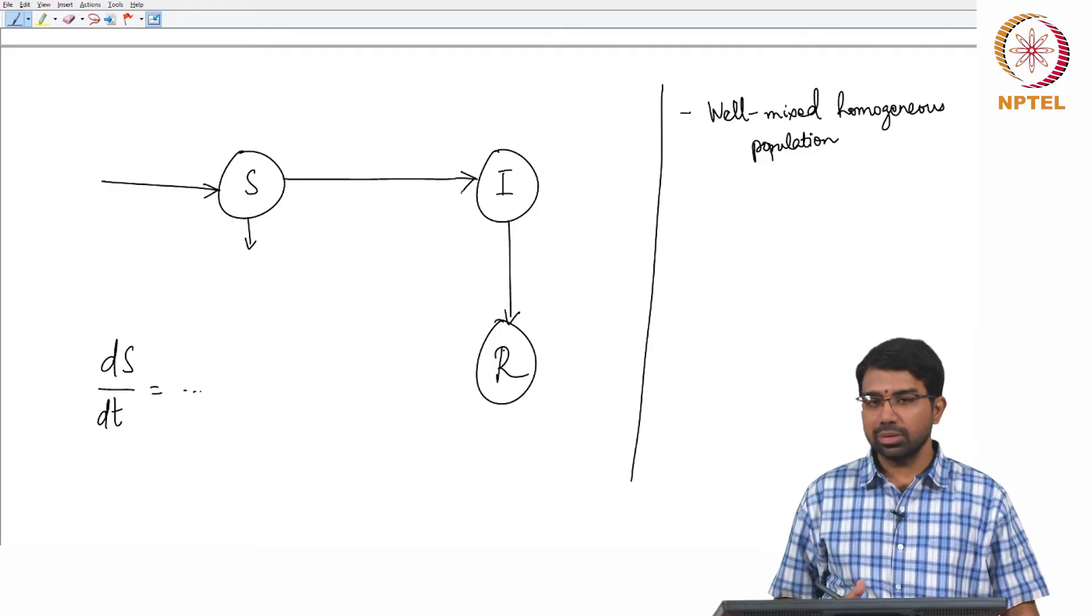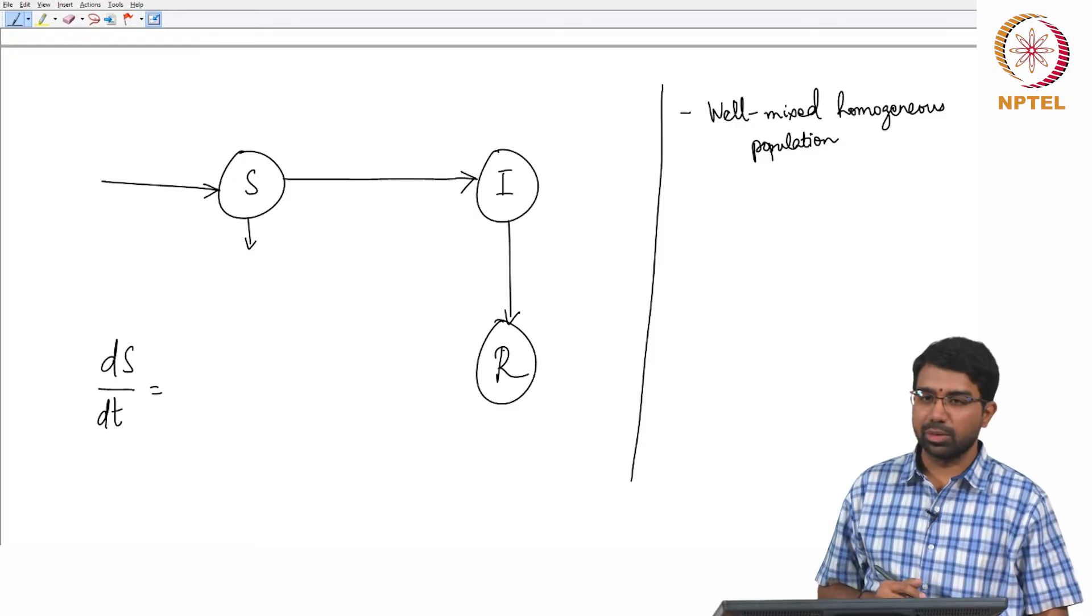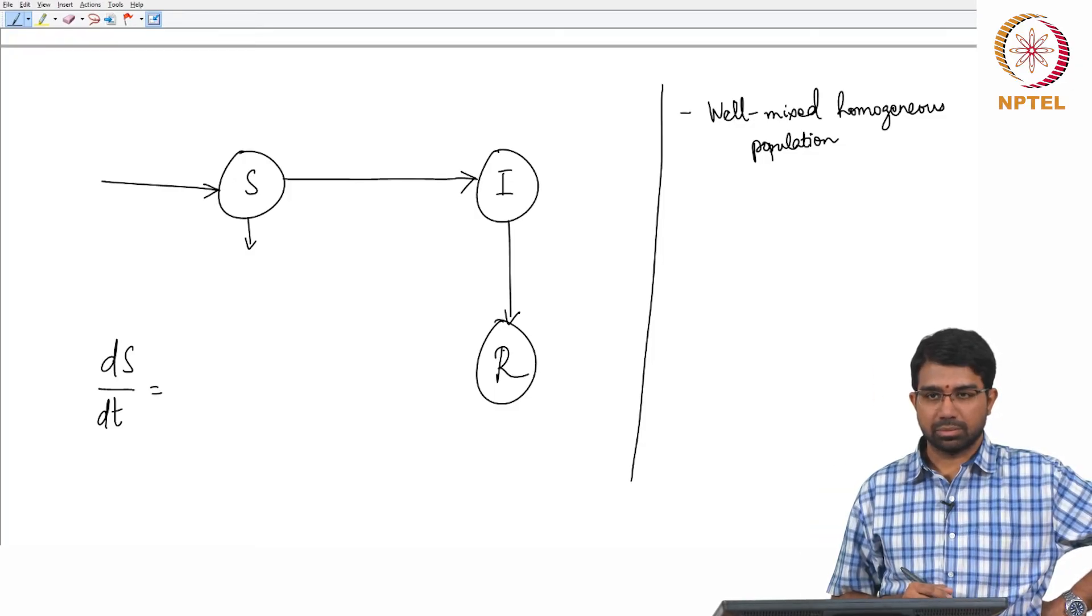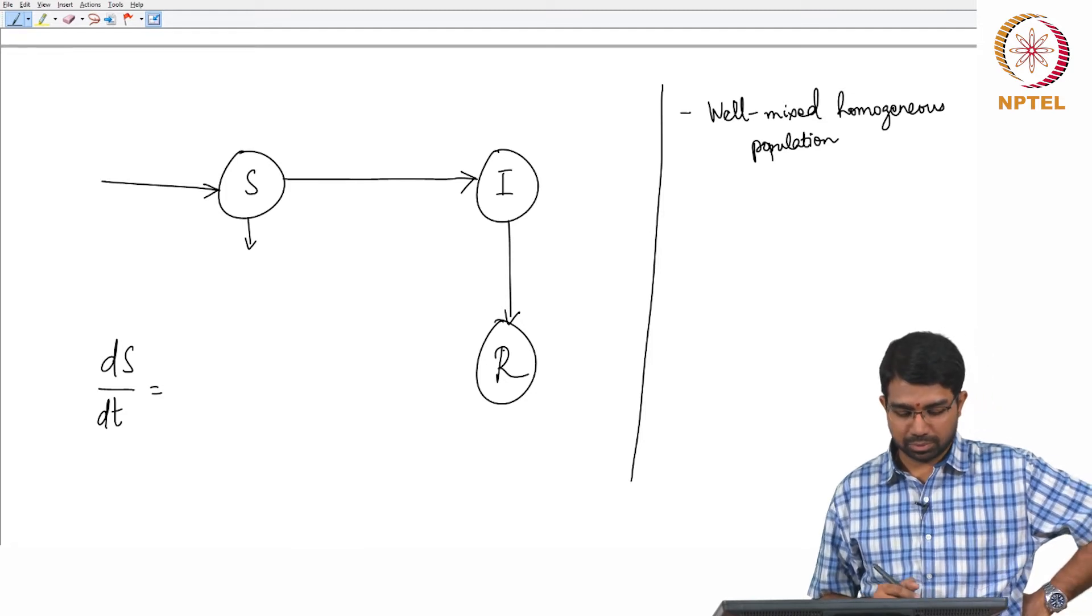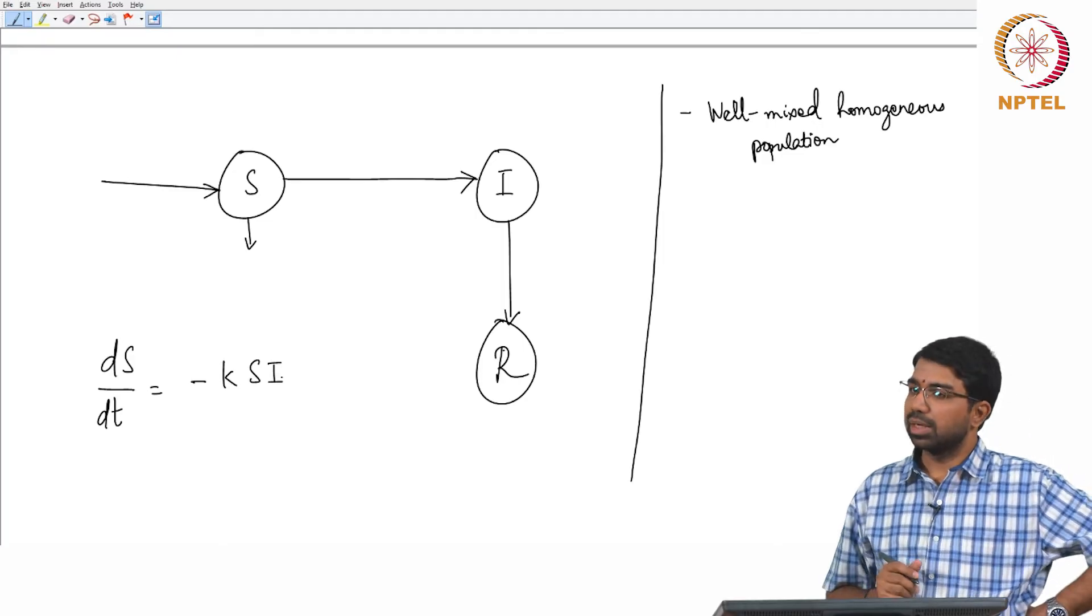Infected people can recover. So how would you write out these interactions? What is dS by dt going to be? S into I, some constant k. Some k into b, rate of birth plus minus. So some minus k, S, I. Everybody agrees?